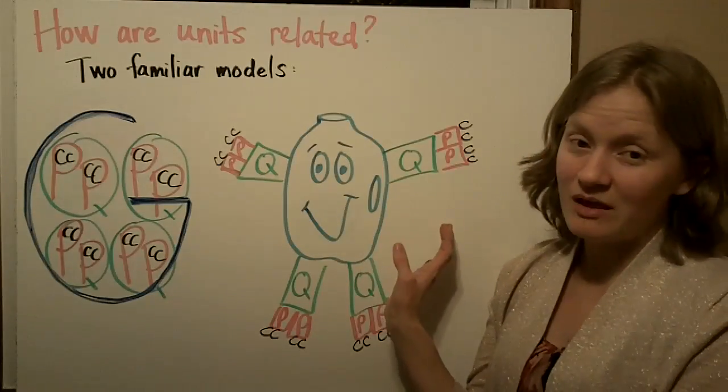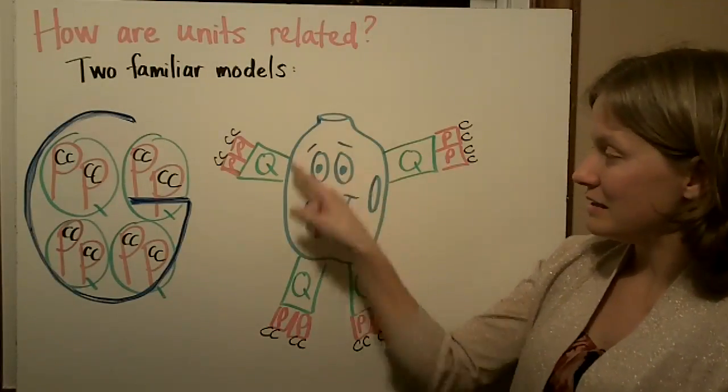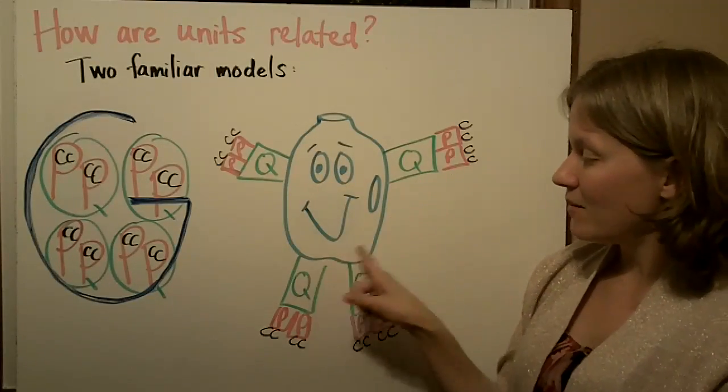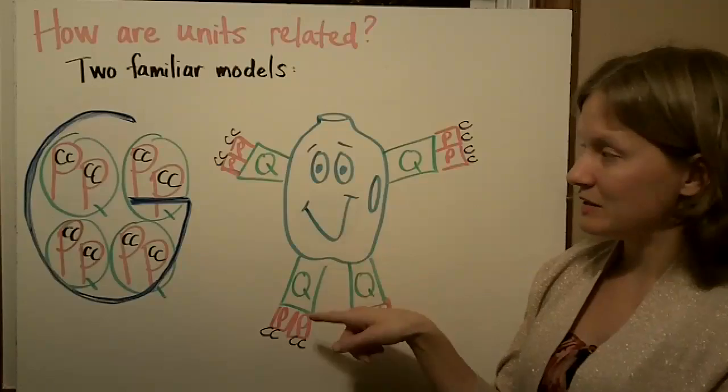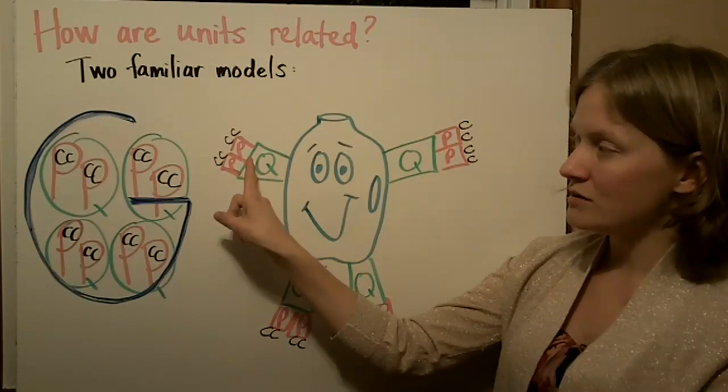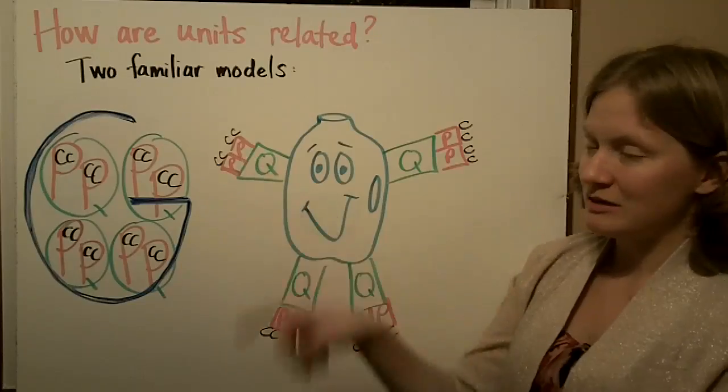Another model that a lot of people like is the gallon man. The big blue represents the gallon. He has four quarts for arms and legs, two pints for each quart, and two cups attached to each pint.